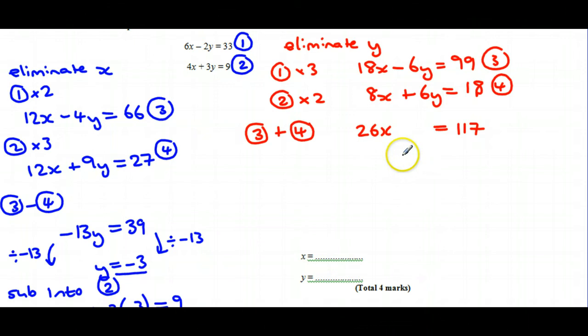So what we're going to need to work out is how many times 26 goes into 117. Funnily enough, it's four and a half. Four lots of 26 would be 104, and another half of which is 13 takes us up to 117.